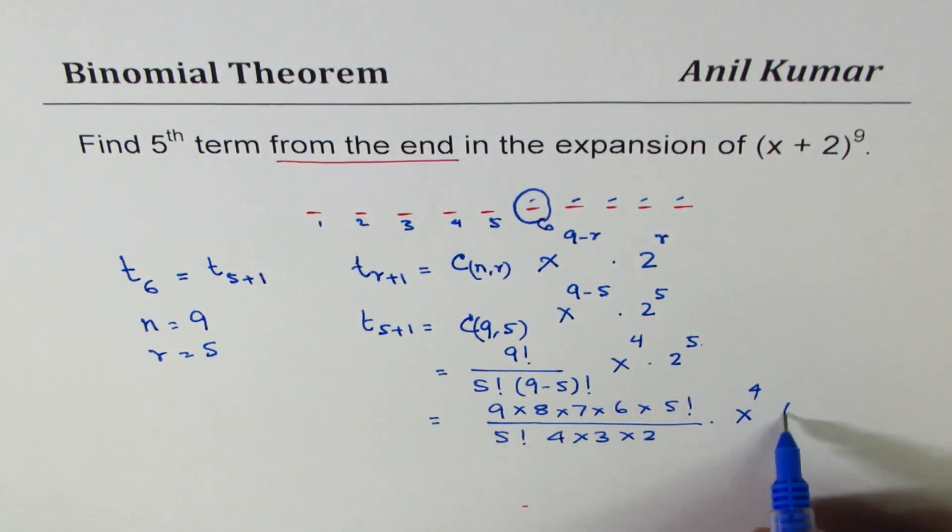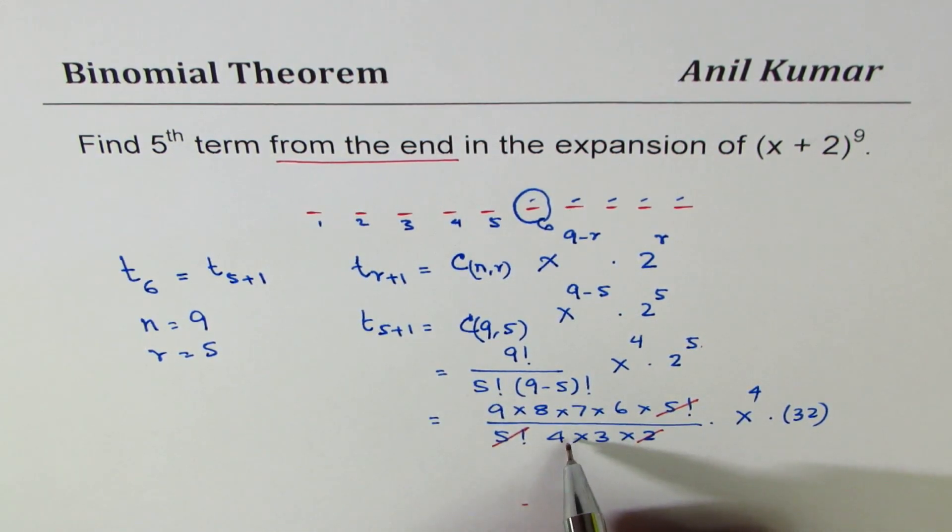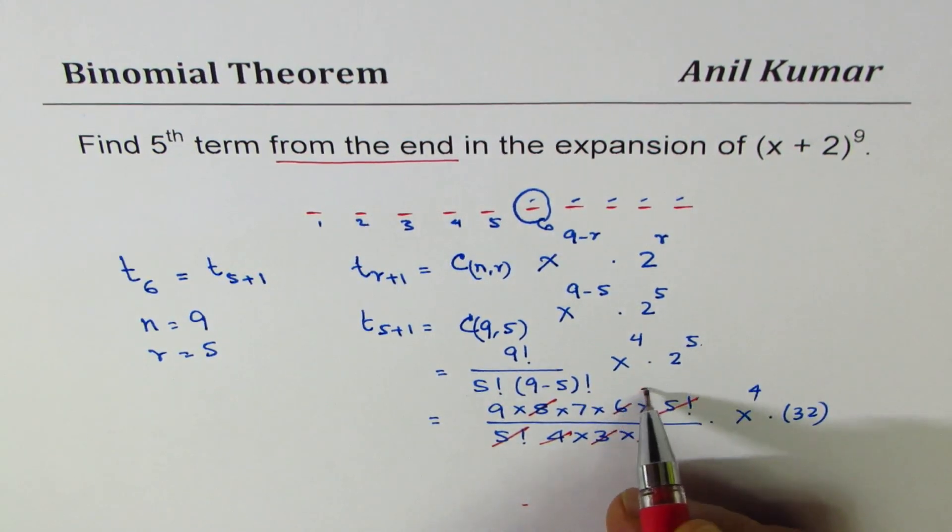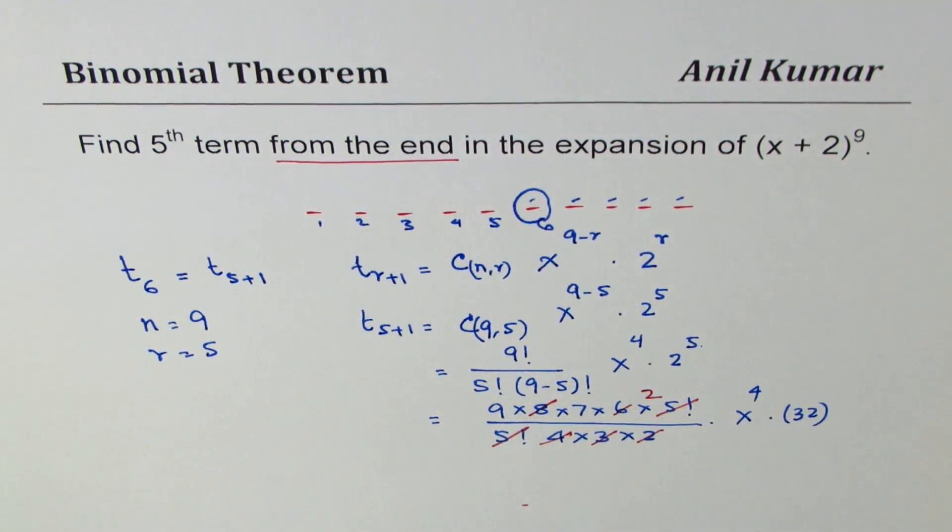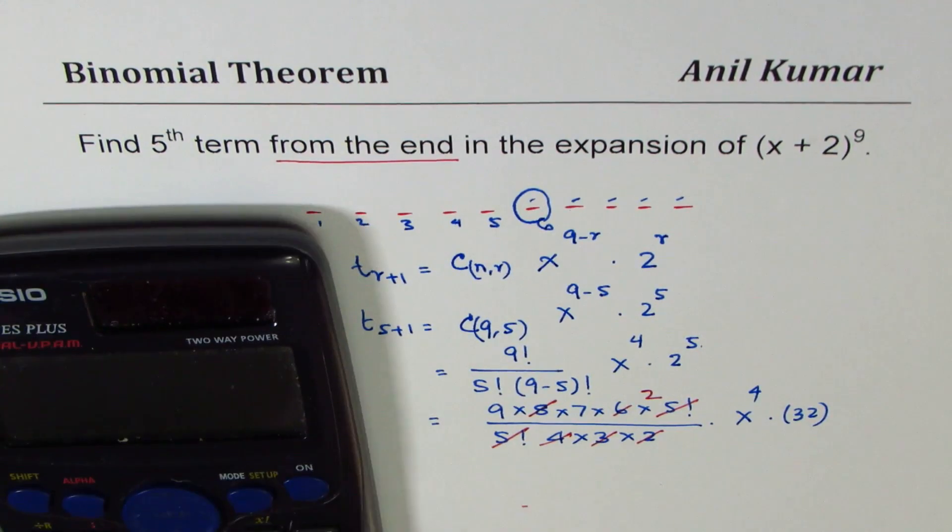2 to the power of 5 is 32. You can simplify this. 5 factorial cancels. 4 times 2 is 8, 8 cancels, 3 goes 2 times. And now we can multiply these terms to get the answer. You could have used calculator to calculate this also. Let me use it now.